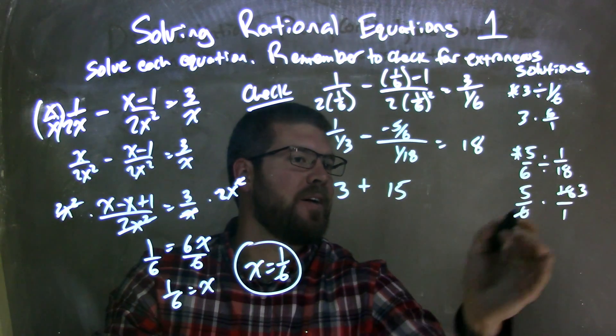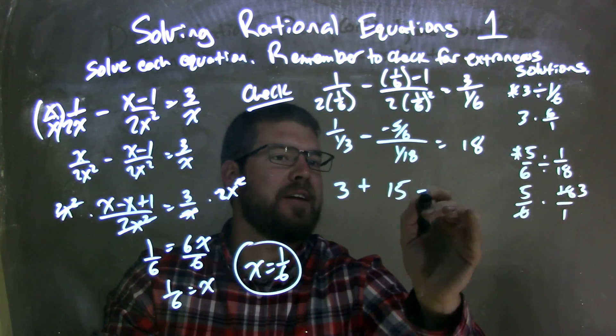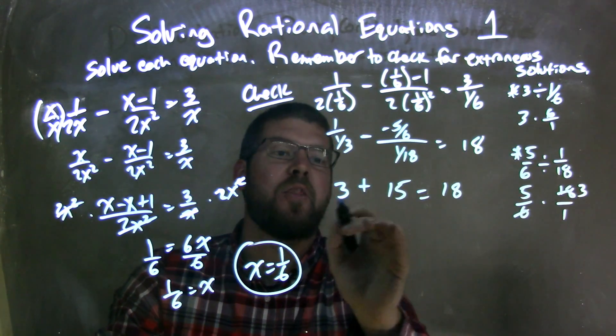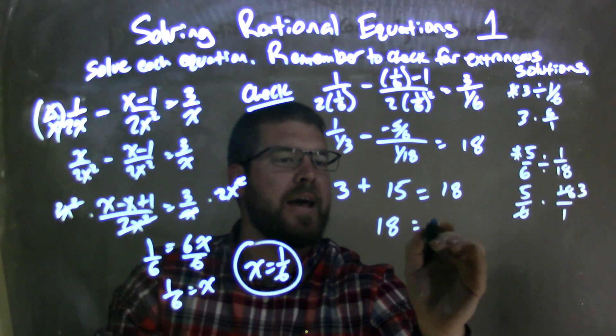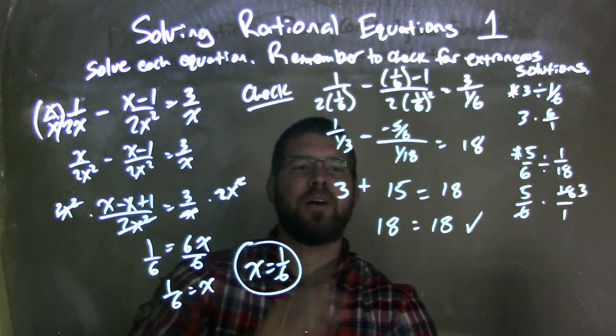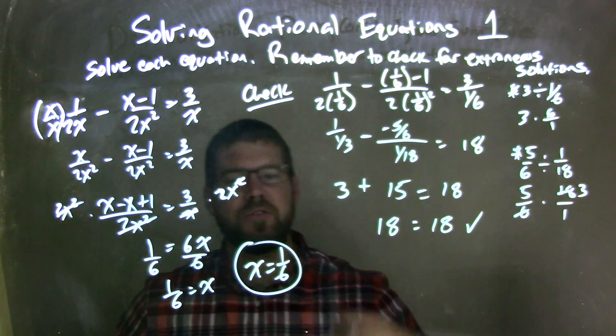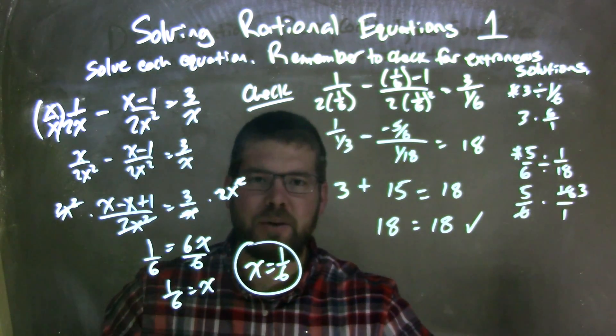5 times 3 is 15 equals my 18 that's on the right. 3 plus 15 is 18. 18 does equal 18. Left and right equal. Fantastic. No extraneous solutions, and my final answer is just x equals 1 sixth.